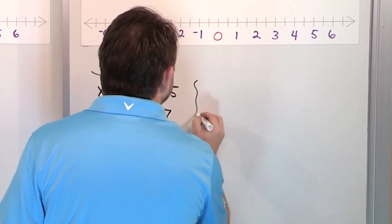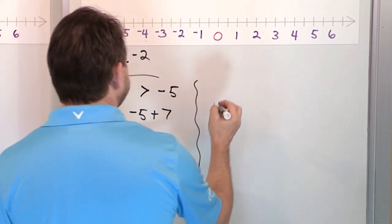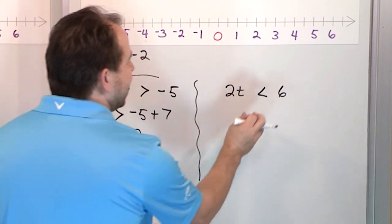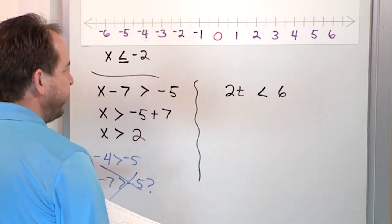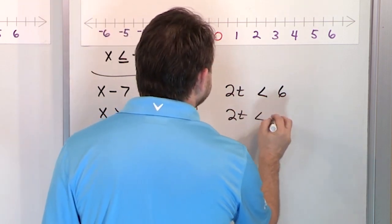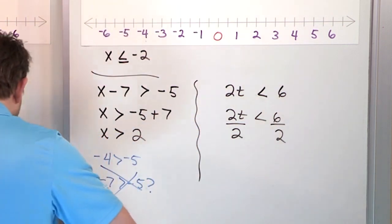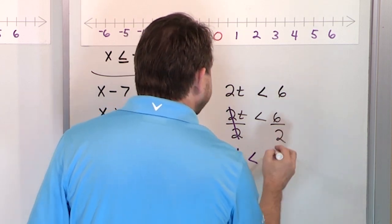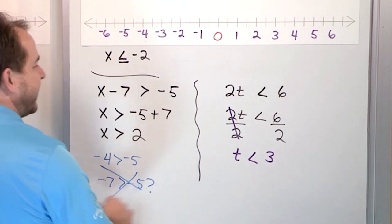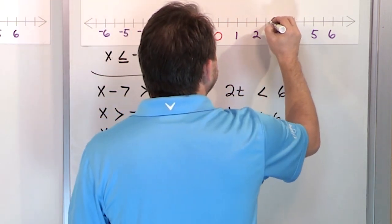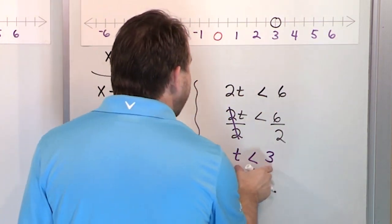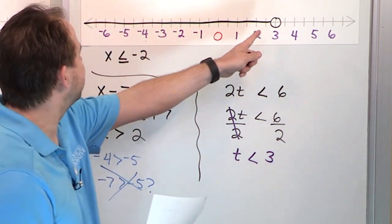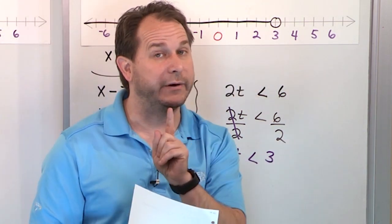Let's do one more simple one. What if we had 2 times the variable t greater than 6? You basically just pretend this is an equal sign. You would divide both sides by 2 so that it cancels on the left, leaving t by itself. 6 divided by 2 is 3. So to graph this, find the number 3, put an open circle because it's not less than or equal to — it's just less than — then shade all numbers to the left of 3.